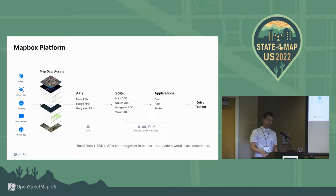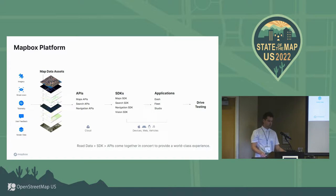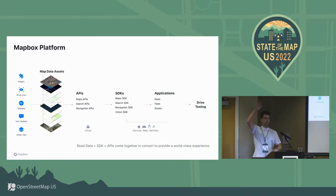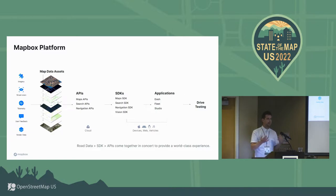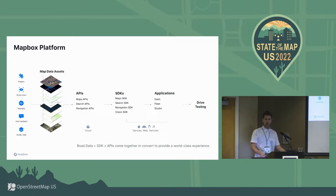Just a quick snapshot of how we think about the different data sources. We collect information, insights, and data from various sources. One of the most integral pieces, again, is the OSM data — that's the bottom layer here. They come together in this stack that is pretty magical, in my opinion. We have all these different sources coming together to create APIs, SDKs, and applications. And ultimately, we need to evaluate them and see how they're performing. That's where drive testing comes in, at this very end.